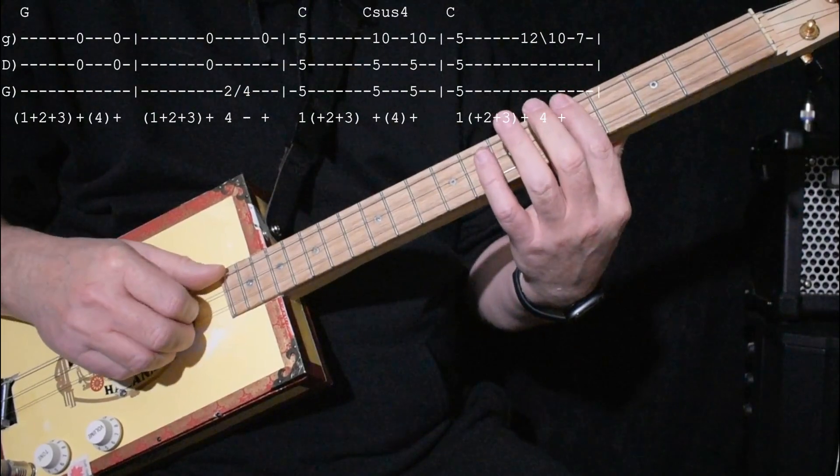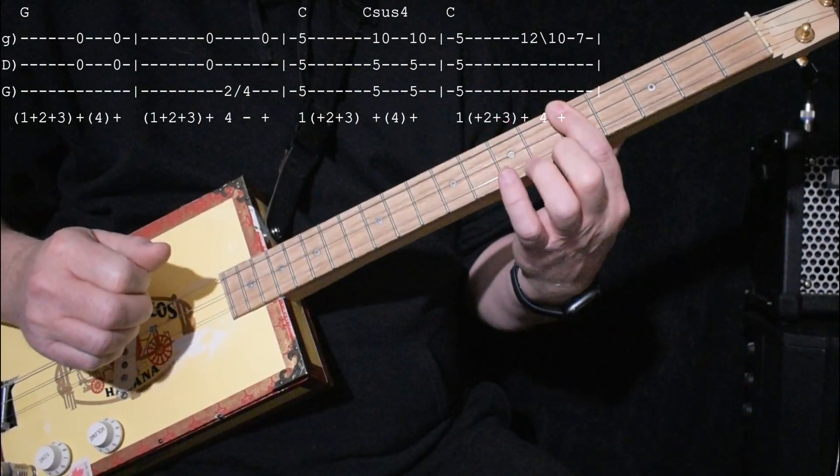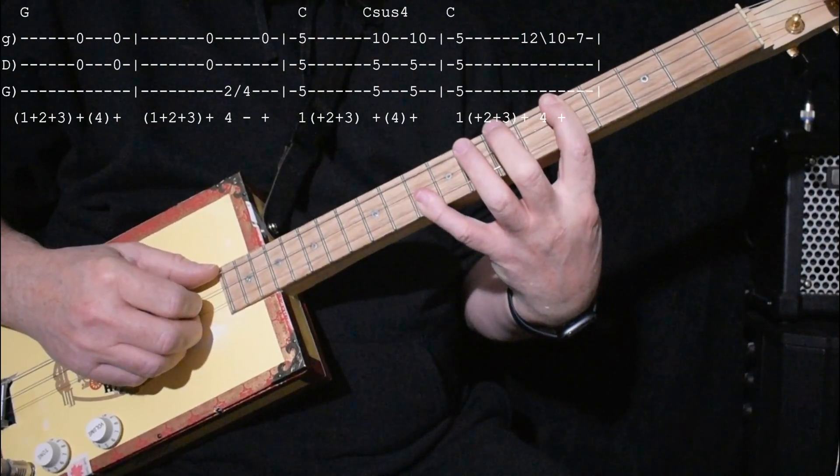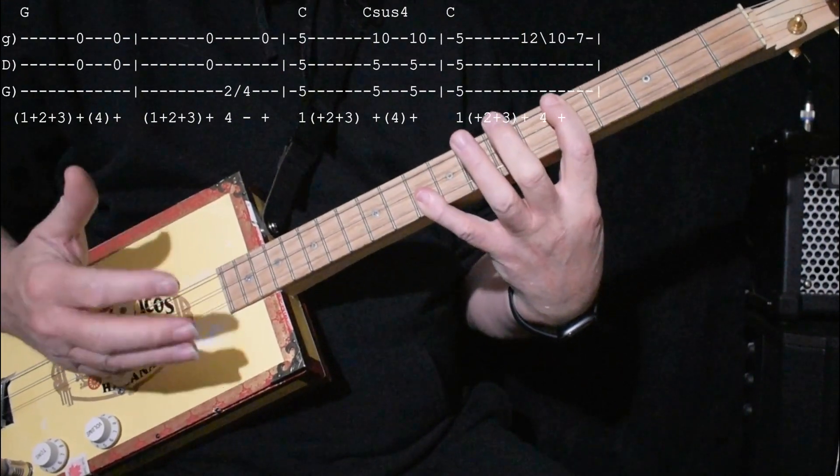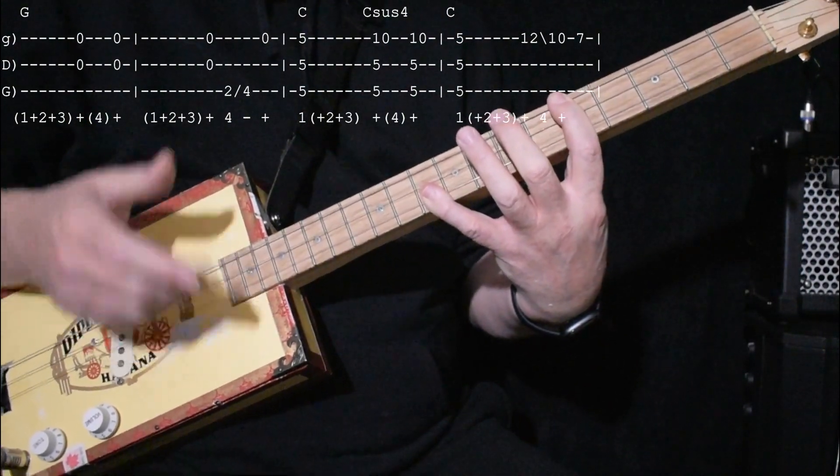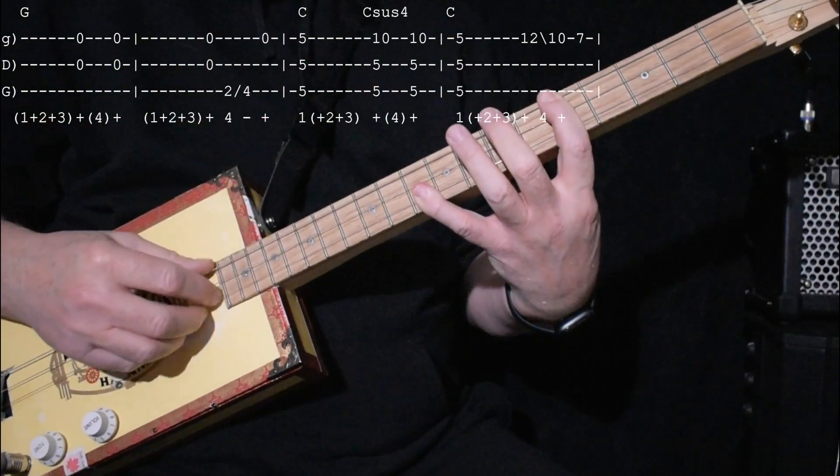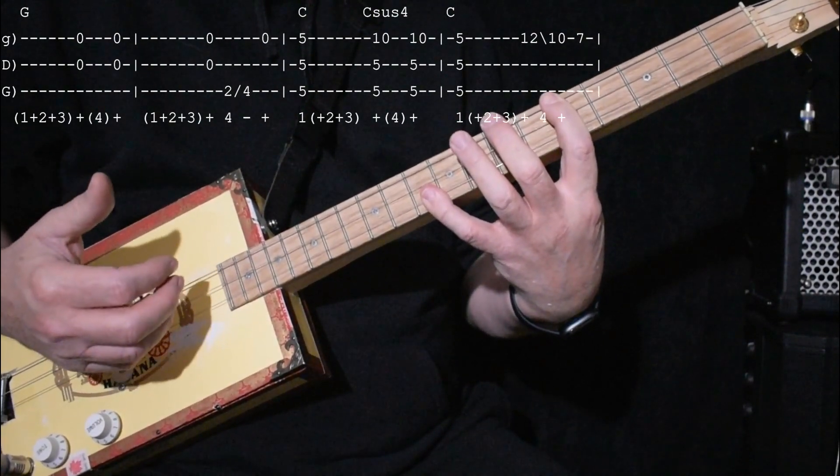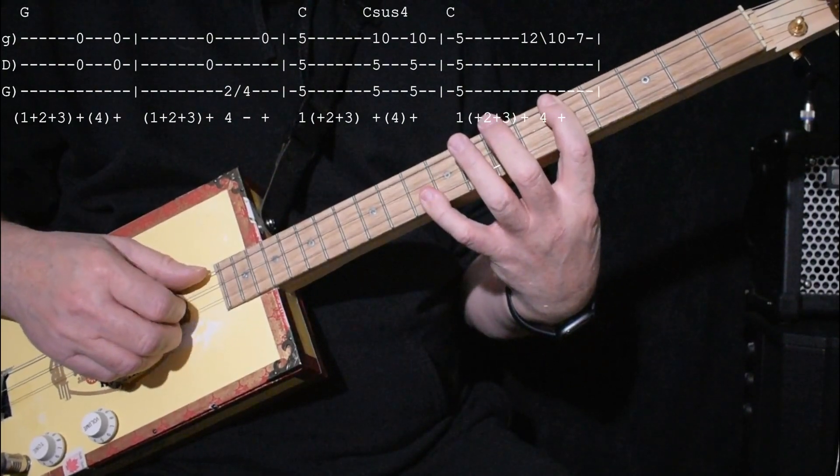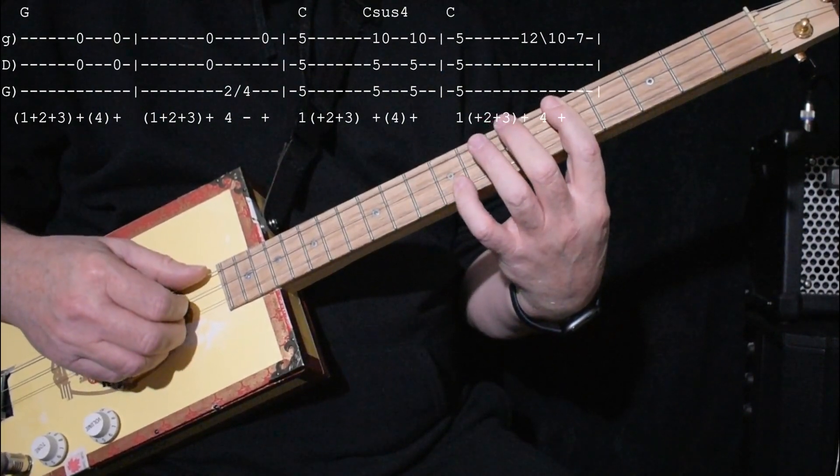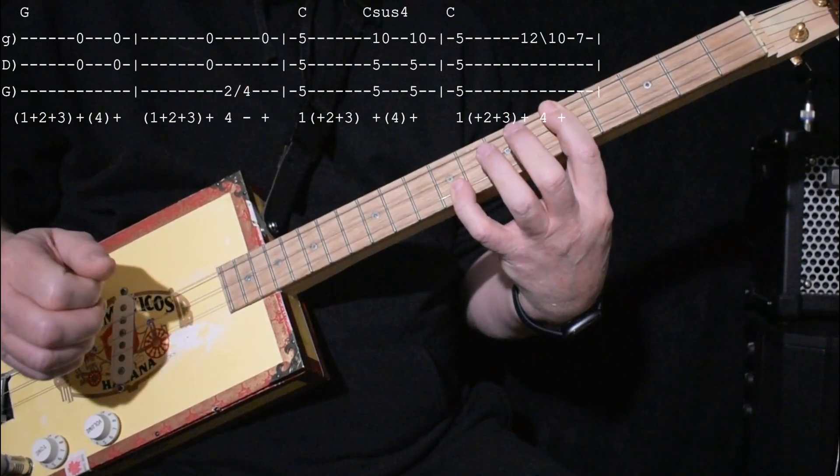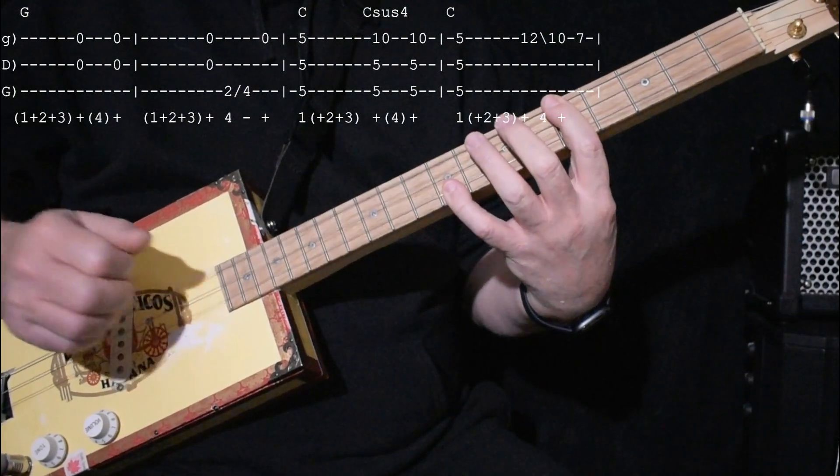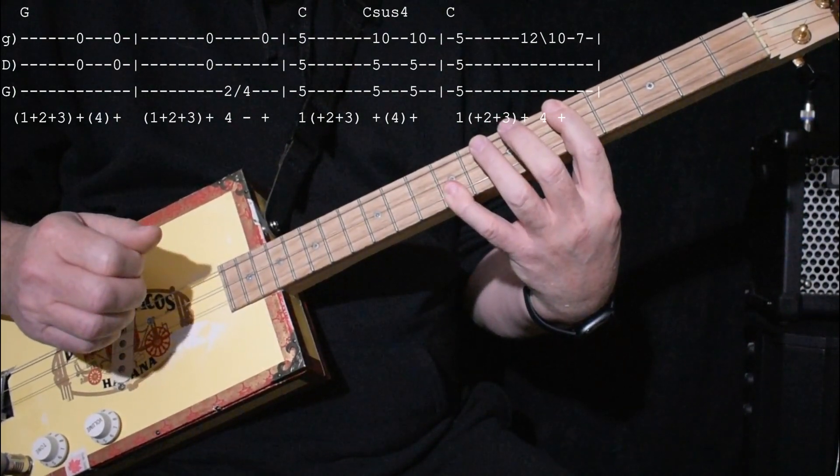Then we go to a C chord, 5, 5, 5. And then we're going to go to a C sus 4, which is 5, 5, 10. Now, that looks hard. It isn't hard. I don't have very big hands, and I've actually had them operated on and stuff, so they don't stretch as much as they even used to. So this is actually pretty doable, and this will sound very, very close to the record. So here we are. C sus 4 does it twice. And then you bring this back down to 9. As a matter of fact, if you're quick at grabbing it, you can grab the C chord as 5, 5, 9.